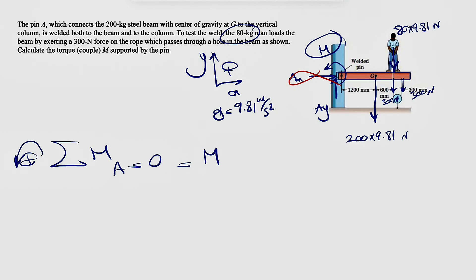So we're going to have the moment of the weight, which is a clockwise moment, so negative 200 times 9.81 times the distance is 1200. We're going to have the weight of that person on top of the beam, another clockwise moment, and the distance would be 600 plus 1200, which is 1800.